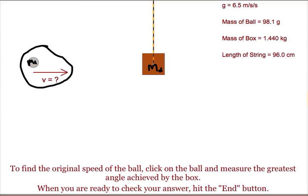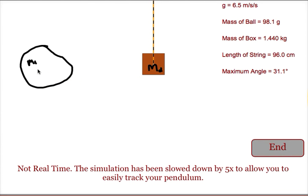When the bullet hits the block, the block's going to swing back and forth like a pendulum. What we want to do is mark the farthest that the box swings back and in this case it's a 31.1 degree angle.